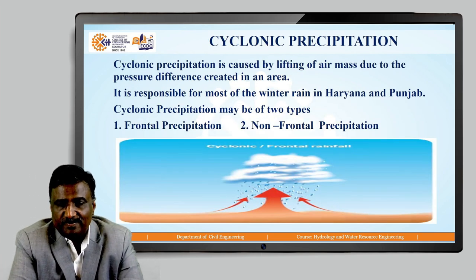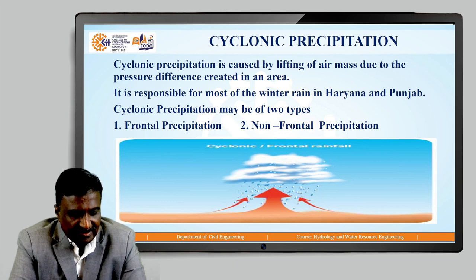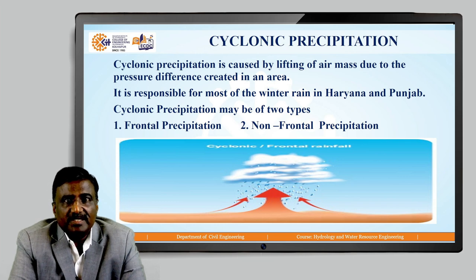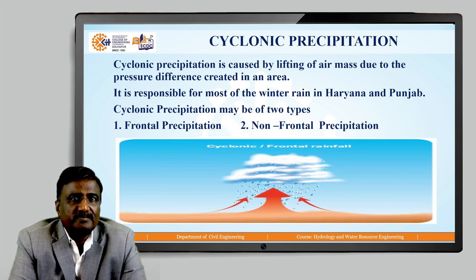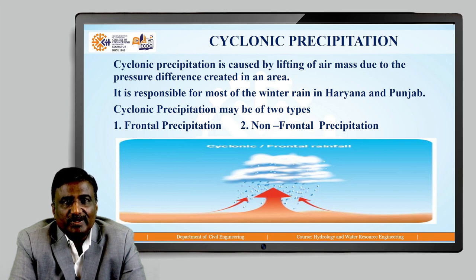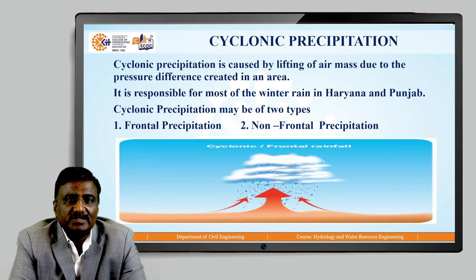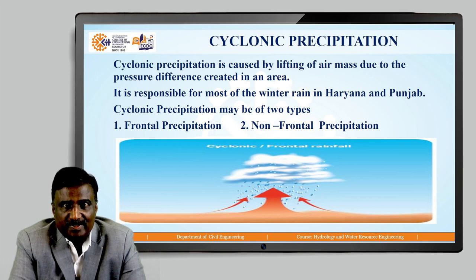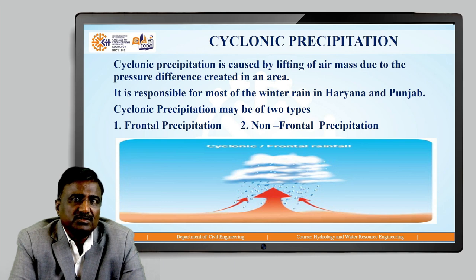Next we will see cyclonic precipitation. Cyclonic precipitation is caused by lifting of an air mass due to pressure difference created in an area. It is responsible for most of the winter rain in Haryana and Punjab. Cyclonic precipitation may be of two types: frontal precipitation and non-frontal precipitation. When warm air is lifted up, cool air takes its place; the warm air is stored as clouds and due to condensation precipitation occurs.